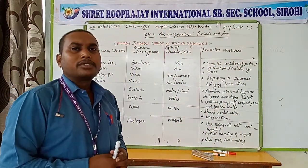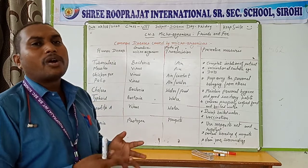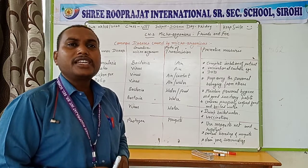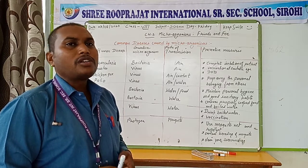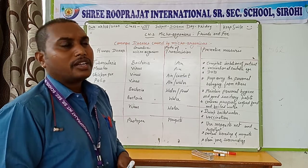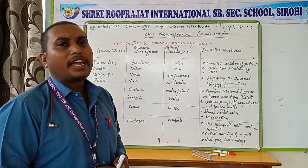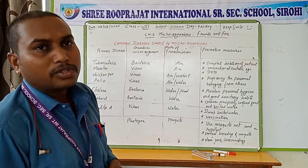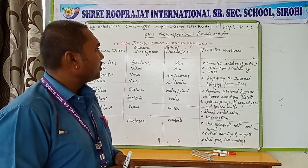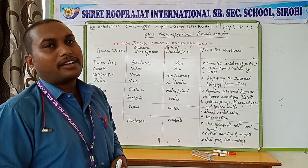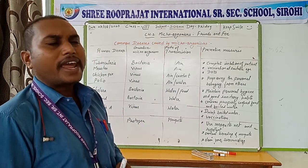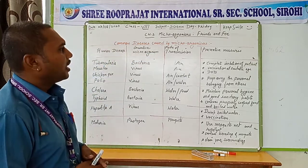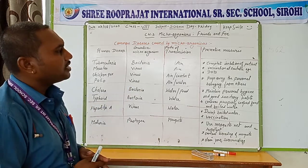Microorganisms are carried by certain organisms known as carriers. Carriers are those organisms which carry these microorganisms to a person or other organisms. Such carriers include mosquito, housefly, and other mode insects which carry these microorganisms. Those organisms which carry microorganisms are known as carriers — for example, mosquito, housefly, etc.